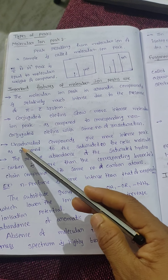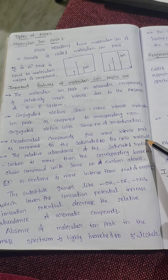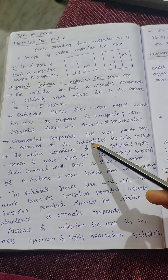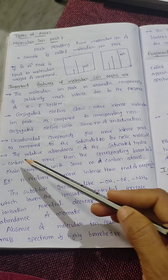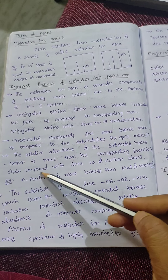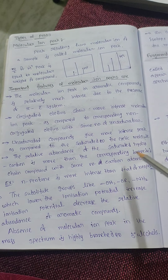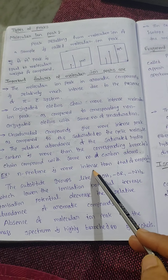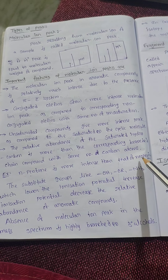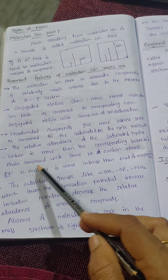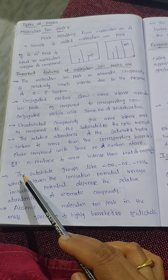Third, unsaturated compounds give a more intense molecular ion peak compared to saturated or cyclic molecules. Saturated and cyclic molecules have low intensity. The relative abundance of straight-chain saturated hydrocarbons is more than the corresponding branched-chain compound with the same number of atoms. For example, n-pentane and neopentane have the same number of carbons and same molecular weight, but the straight-chain saturated hydrocarbon is more intense than the branched one.